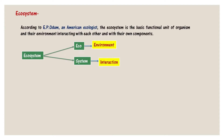E.P. Odum, an American ecologist, said that an ecosystem is a basic functional unit of organisms and their environment interacting with each other and with their own components. He said it is an ecological unit which includes all the organisms — the community — in a given area, interacting with the physical environment so that the flow of energy leads to a clearly defined trophic structure and feeding relationship.